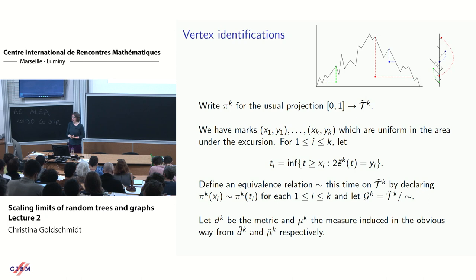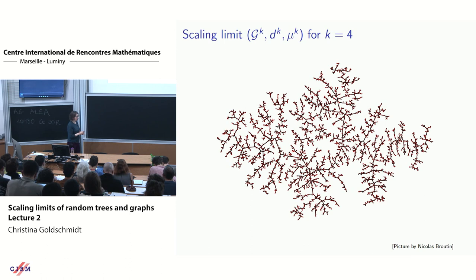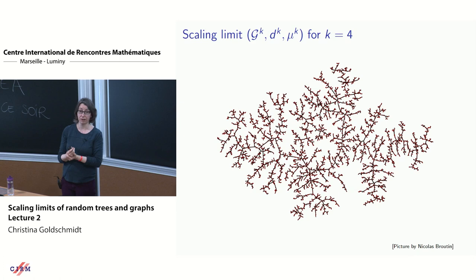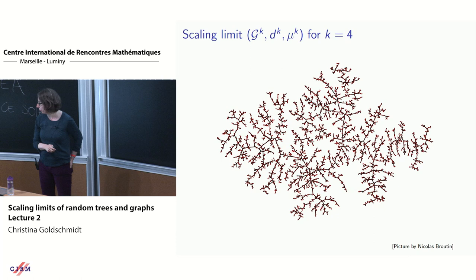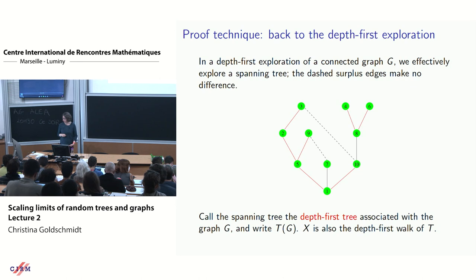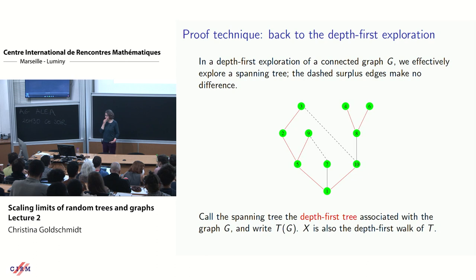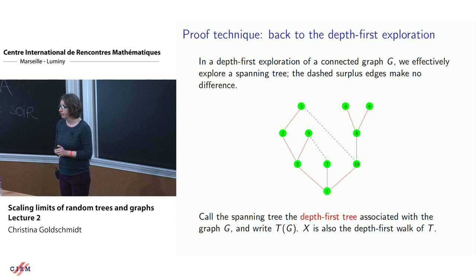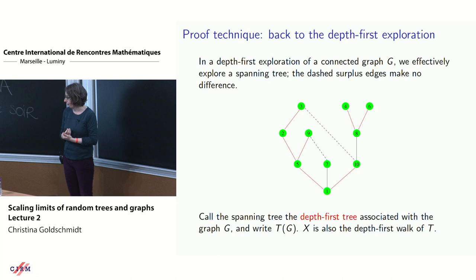The scaling limit looks like a graph built on a Brownian CRT-like spanning tree — absolutely continuous with respect to the Brownian CRT — with k vertex identifications. Back to the depth-first exploration: when we explored a connected graph g, we effectively explored a spanning tree and ignored the dashed surplus edges. Let's call this the depth-first spanning tree T(g).